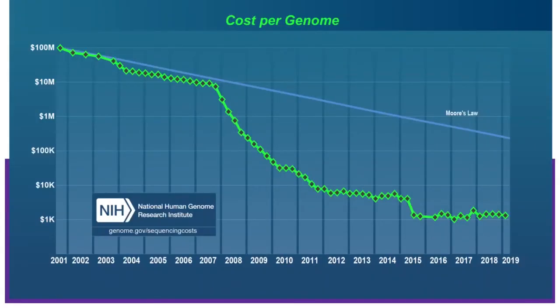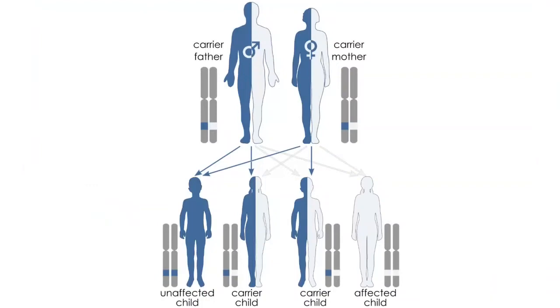As the cost of sequencing and gathering genetic data plummets, there's going to be more and more genetic information available. And what we want to do is help you understand how to use that genetic variation to help explain variability in human outcomes.